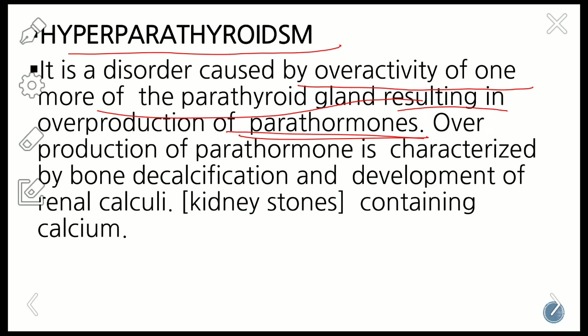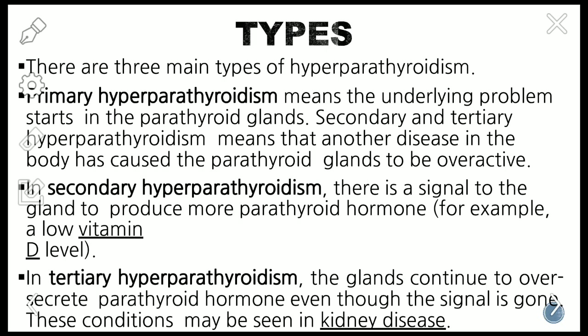Overproduction of parathyroid hormone is characterized by bone decalcification. When there is hyperparathyroidism, more parathyroid hormone will destroy the bone and cause development of renal calculi — kidney stones containing calcium. There are three main types of hyperparathyroidism: primary hyperparathyroidism, secondary hyperparathyroidism, and tertiary hyperparathyroidism.